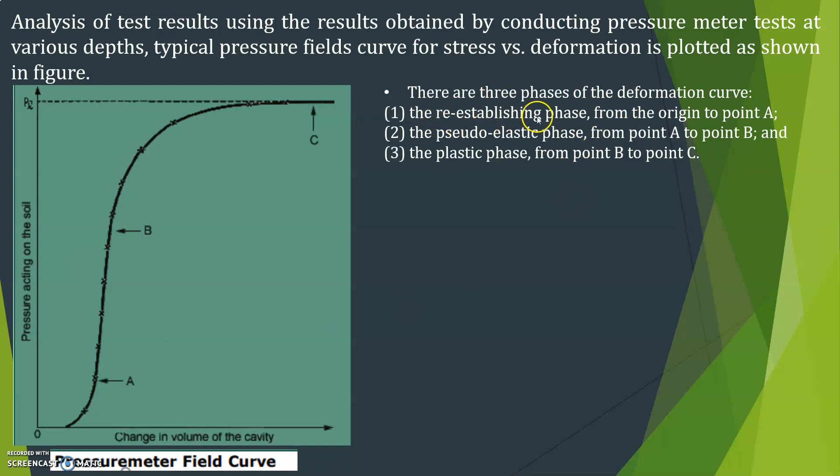The first one is re-establishing phase from the origin to point A. Here, this portion, this deformation is called as re-establishing phase. The pseudo-elastic phase that is from A to B and this portion A to B that is called as pseudo-elastic phase and the last phase that is the plastic phase that is from B to C. After the borehole is drilled and the augers are withdrawn, the borehole walls relax, thus reducing the cavity volume.